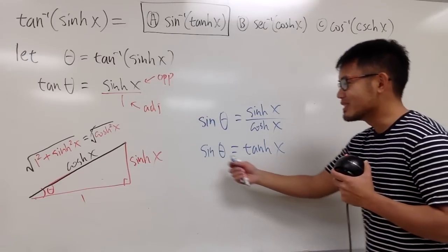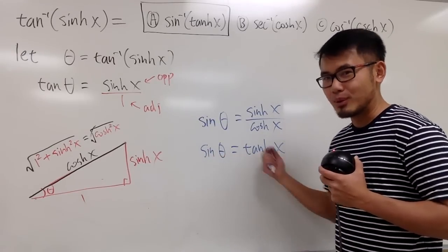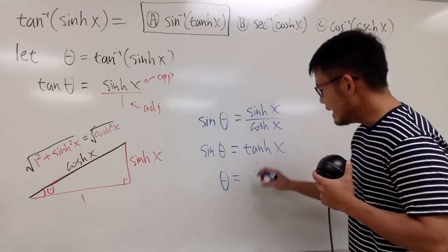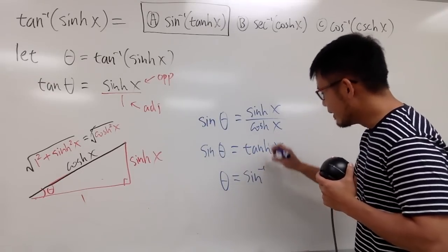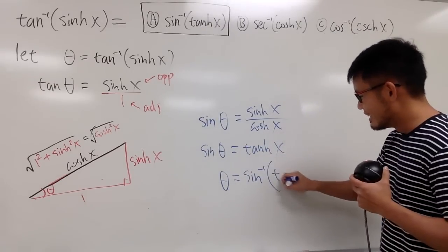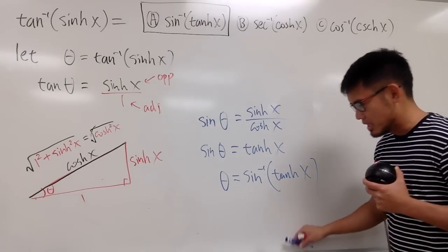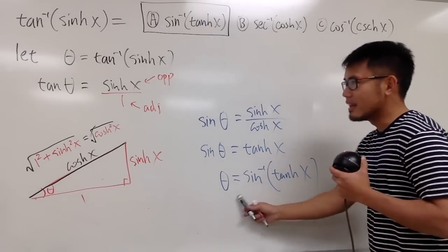And now, we can just take the inverse sine on both sides. In other words, we get theta is equal to inverse sine of this input is tanh of x. Really cool, isn't it?